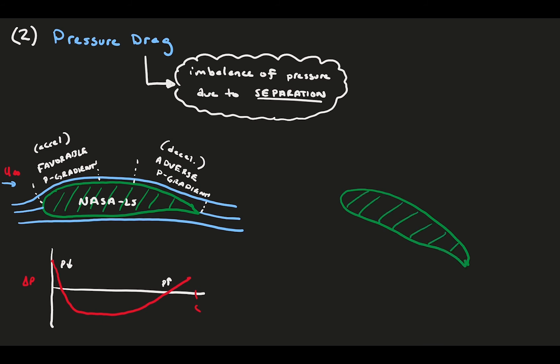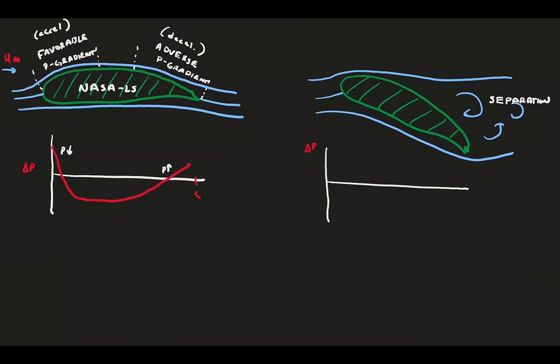Now, consider the same foil at a dramatic angle of attack. Flow passes over the foil, but the angle is just too large and flow separates from the surface. The pressure distribution, in an ideal case, where flow remained attached at this angle, would be a massive drop in pressure that would then recover.